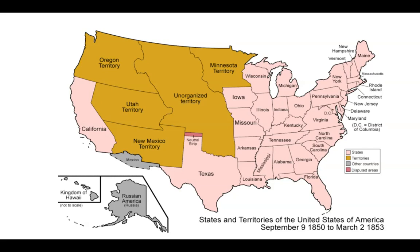The neutral strip had to be free of slavery because of Missouri's southern border rule. Texas didn't want that, so they gave that portion of land to the U.S. government. This is already in 1848. That strip of land is adjacent to Indian Territory and Oklahoma Territory, and this adjacent strip would become the panhandle of Oklahoma we have today.